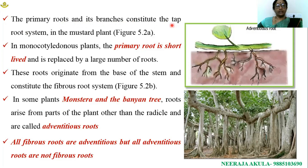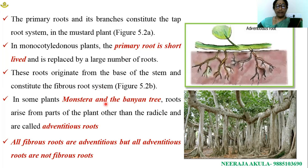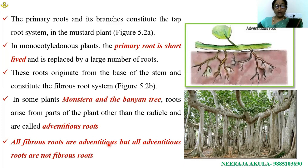The primary root and its branches constitute the tap root system. In the diagram, a mustard plant is shown. In monocotyledon plants, the primary root is short-lived and replaced by a large number of roots — these originate from the base of the stem and constitute the fibrous root system. In case of monstera and banyan tree, roots arise from parts of the plant other than the radicle and are known as adventitious roots. All fibrous roots are adventitious, but not all adventitious roots are fibrous.